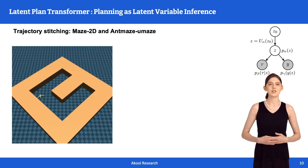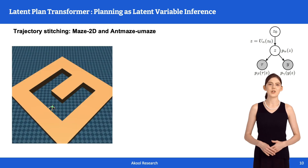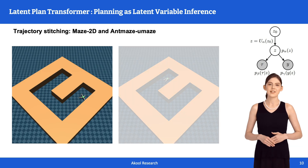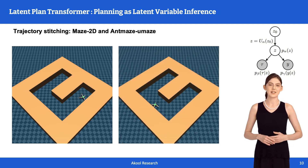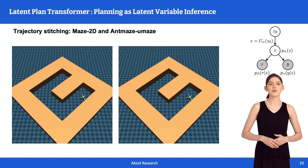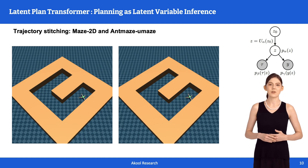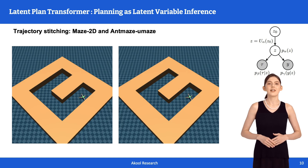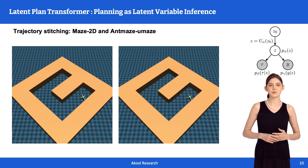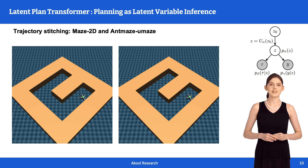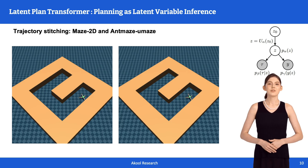Here are further visualizations of trajectory stitching in the AntMaze Umaze environments, demonstrating the versatility and effectiveness of our proposed model. From these visualizations, you can see that the agent starts by taking in the return as input to generate a plan through posterior sampling, then makes decisions step-by-step to reach the goal. This process highlights how LPT effectively plans and navigates through complex environments to achieve its objectives.